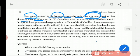In 1785, Cavendish carried out some experiments with air in which he separated nitrogen gas and oxygen gas from it. He was left with bubbles of some unknown gas, possibly argon, but he was unable to identify it.